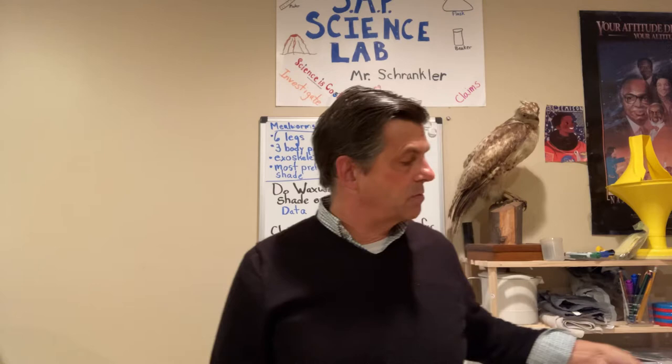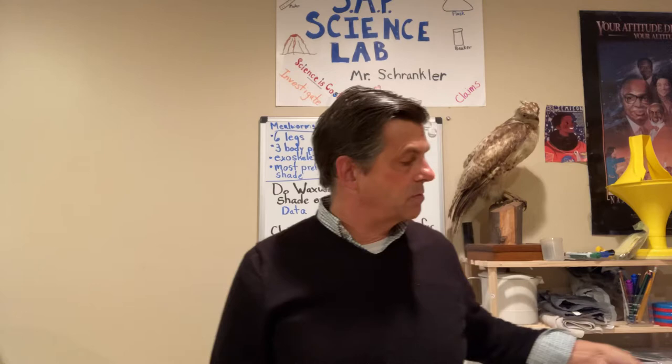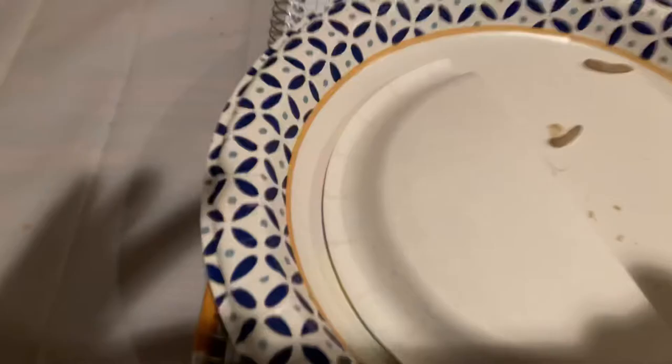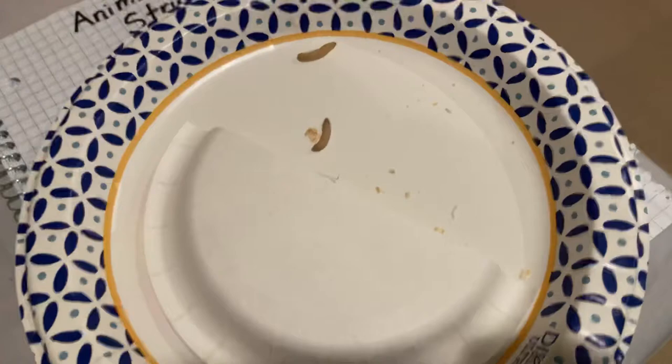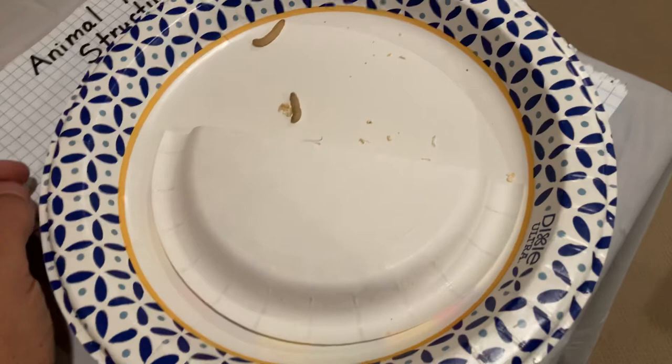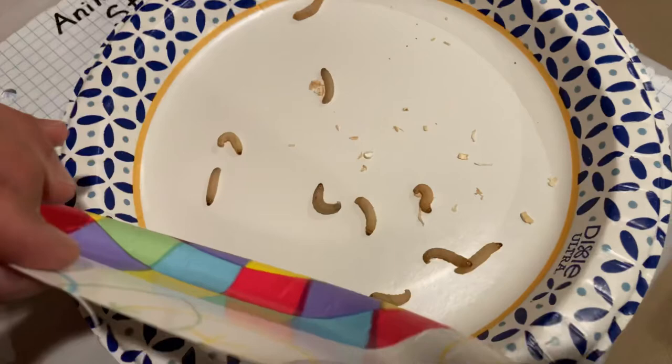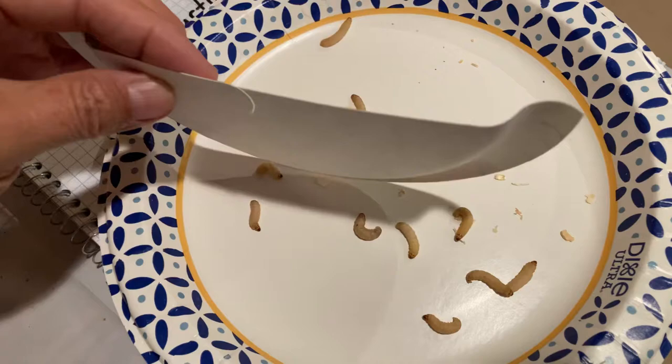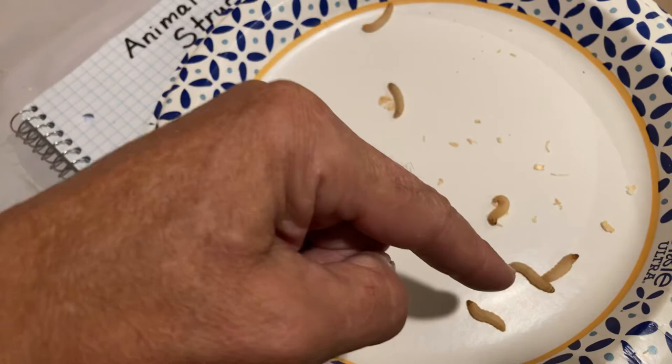Let's first check out the shade and light experiment. I'm going to move the plate I set up and bring the camera over there. I started with 10 waxworms, put them right in the middle. I can see two in the light right now. Let's see if they're under here - and whoa, yeah. So this is where the end of the shade was right here. How many do we have in the shade? One, two, three, four, five, six, seven, eight. Eight in the shade and two in the light.